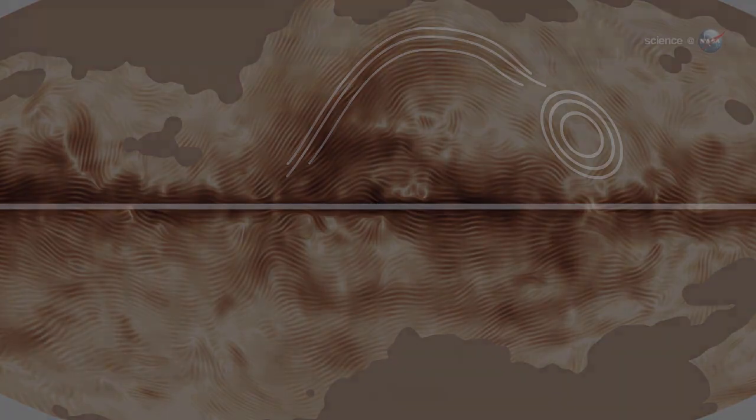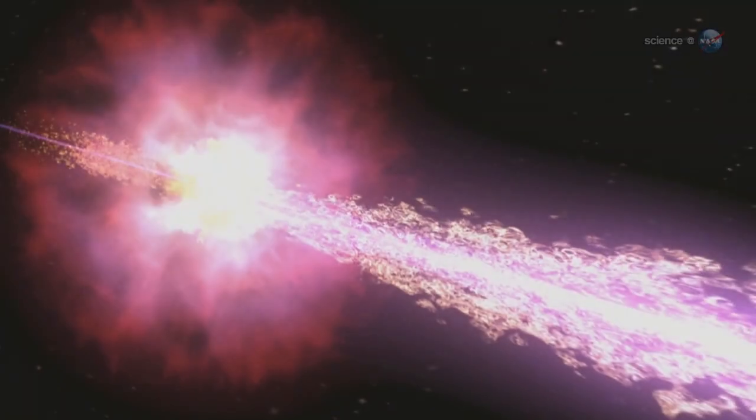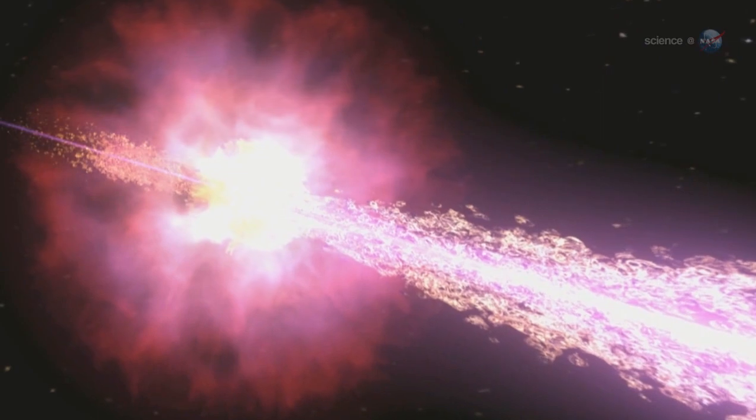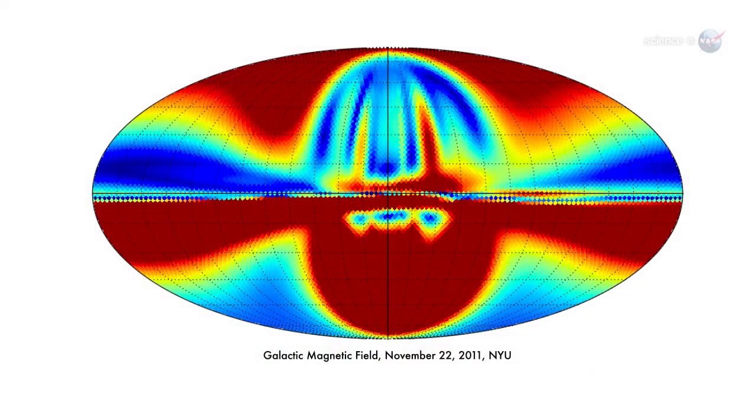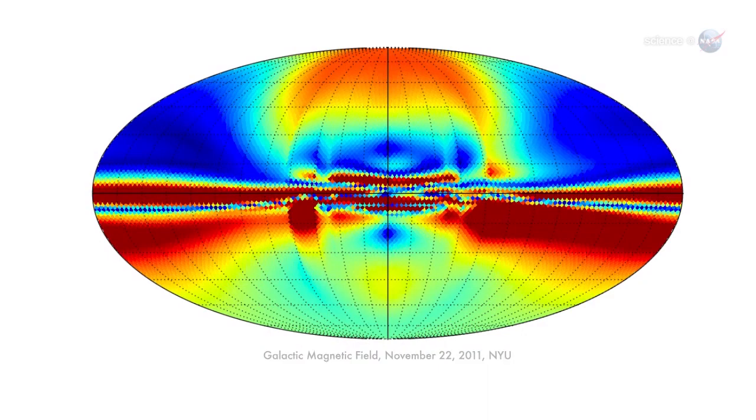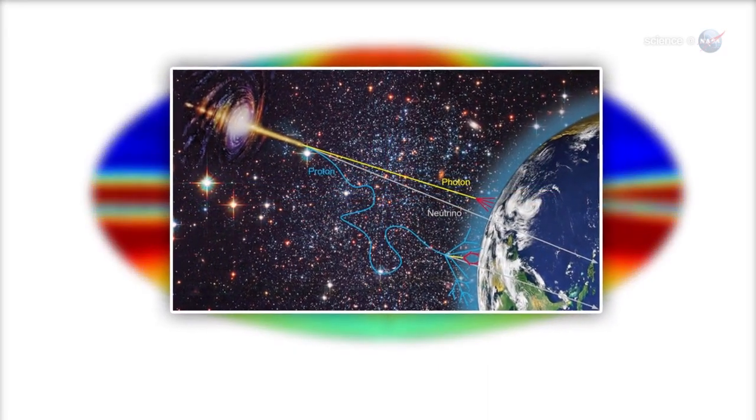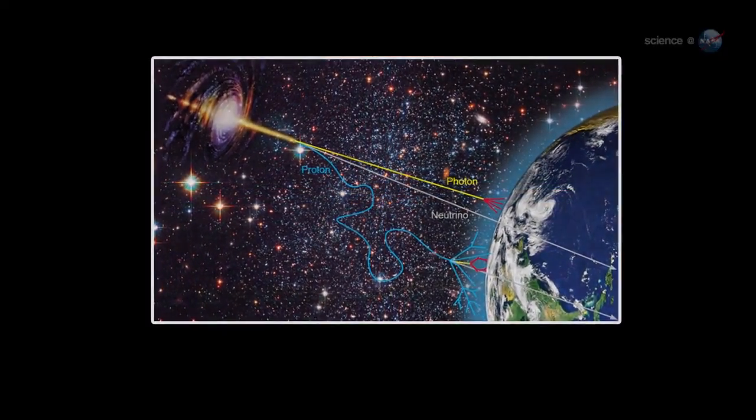Mapping these details is important. For one thing, notes Ferrière, it helps us understand very high-energy cosmic rays. These mysterious particles are deflected by the Milky Way's magnetic field. Tracing them back to their point of origin requires knowing that field's morphology.